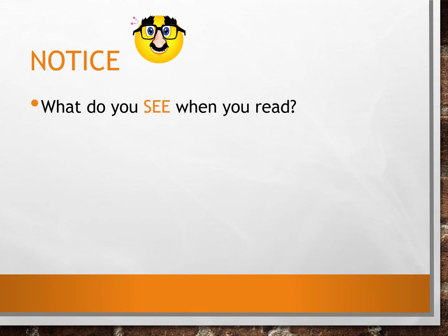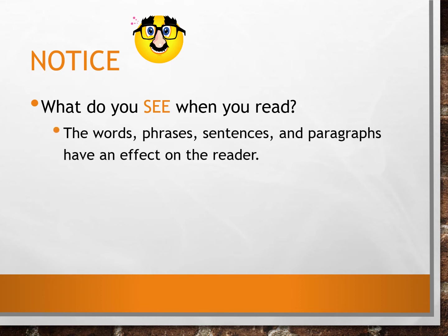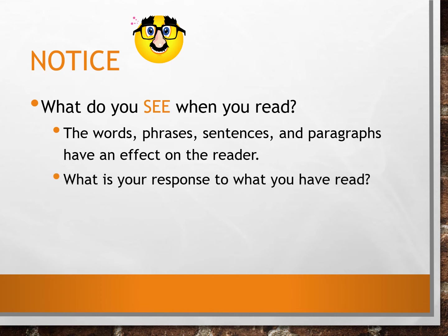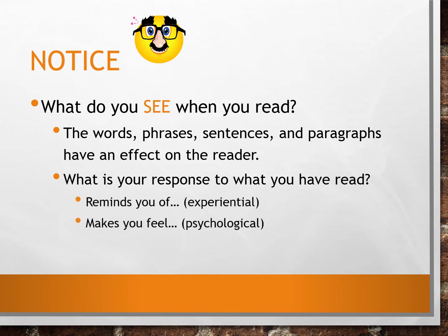Step one is to notice — what do you see when you read, look at an image, or watch a film? Pay attention to words, phrases, sentences, and paragraphs in a reading; in an image, these might be colors and shapes; in a film, it might be shots, cuts, or lighting. Once you've noticed, consider your response — it may remind you of something, make you feel something, or make you realize something. When annotating a text, this is the highlight stage where you highlight anything that could possibly be important later.